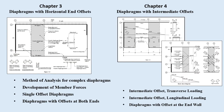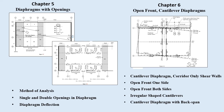Chapter three covers method of analysis for complex diaphragms, development of member forces, single offset diaphragms, and diaphragms with offsets at both ends. Chapter four covers intermediate offset transverse loading, intermediate offset longitudinal loading, and diaphragms with offsets at the end of the wall. Chapter five shows how to analyze a diaphragm with large openings, which includes single and double openings, and how to calculate diaphragm deflection.